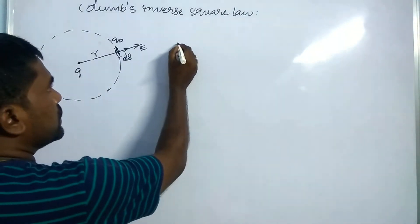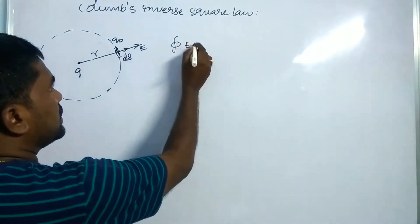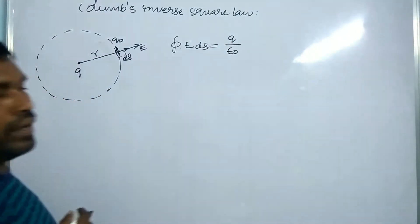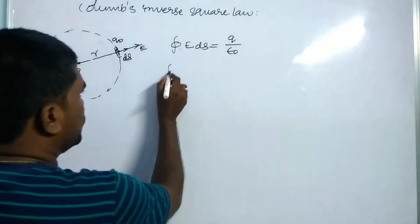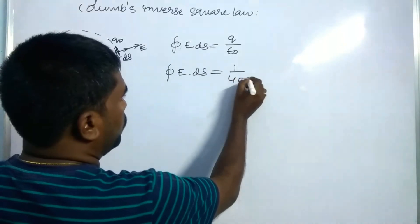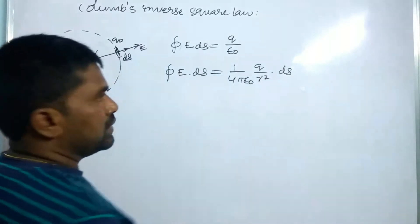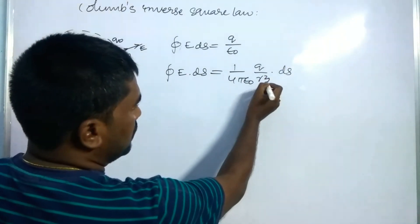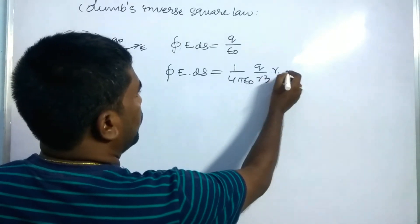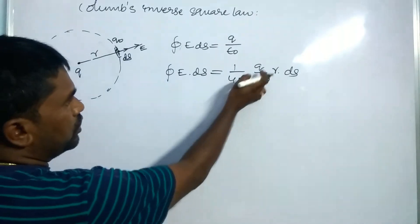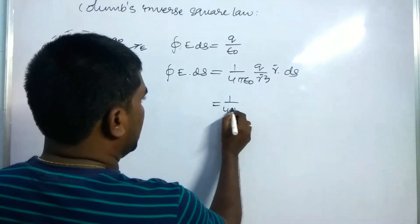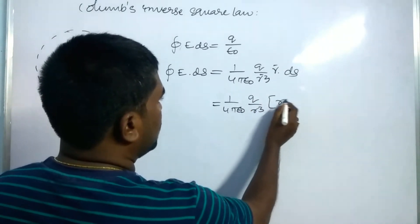According to Gauss law, ∮E·dS = Q/ε₀. Taking the left-hand side, E·dS — using E from Coulomb's inverse square law we can write (1/4πε₀) × Q/R² · dS. In vector form, this becomes (1/4πε₀) × Q/R³ × R⃗·dS⃗. Simplifying, this is (1/4πε₀) × Q/R³ × R·dS·cosθ.